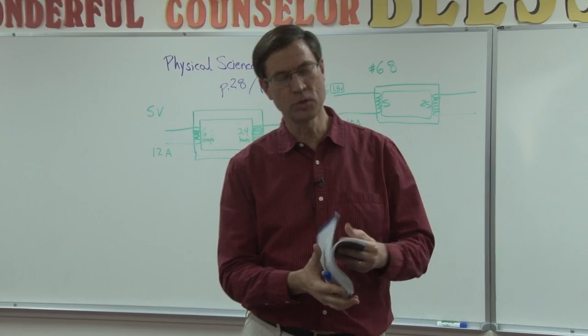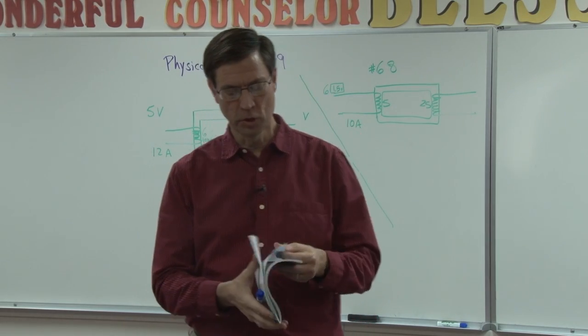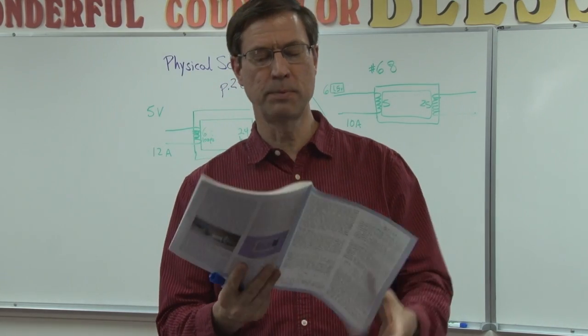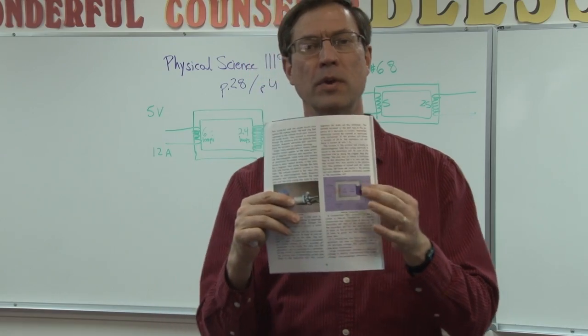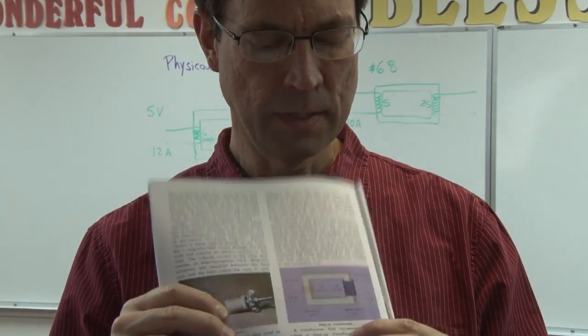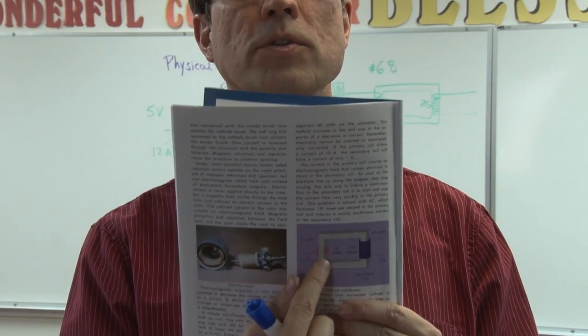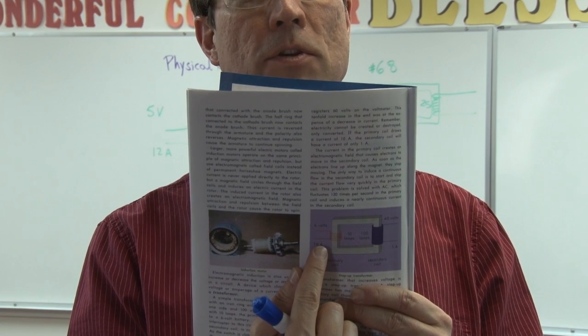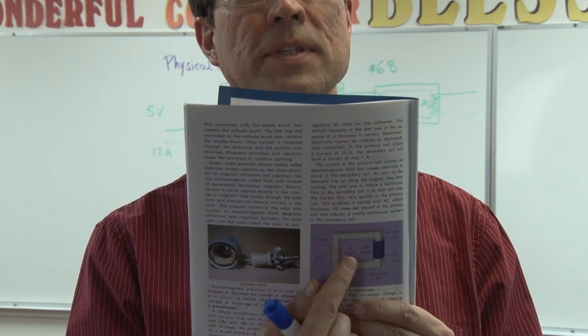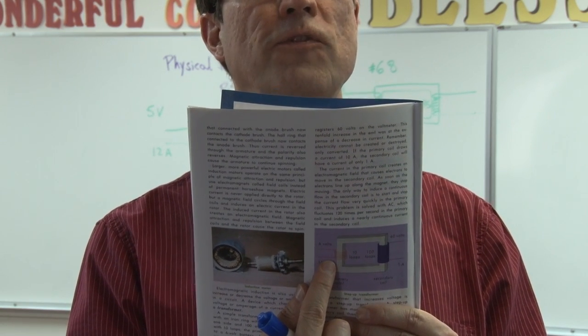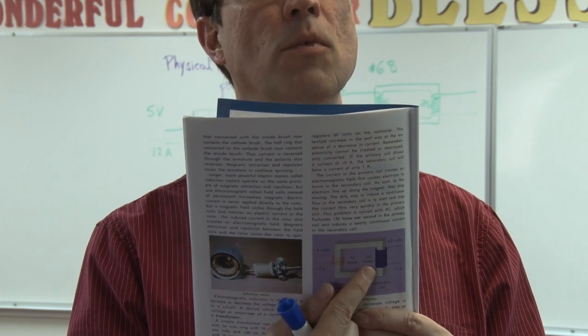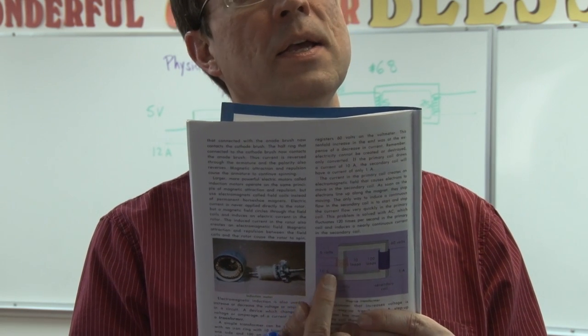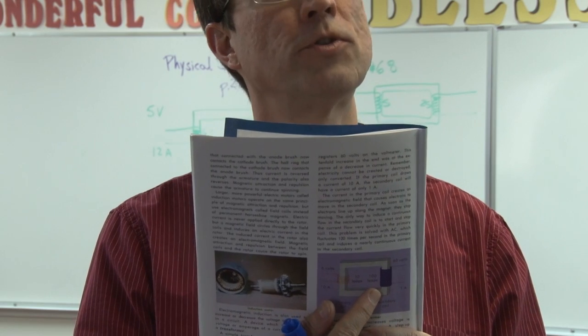If you go to page 28 in your pace, second to the last page, you'll see a diagram that looks like this. And you'll notice that there's coils over here and coils over here, and it tells us that there's a relationship between the coils on this side and this side. If there's fewer on the left and more coils on the right, it's called a step-up transformer.